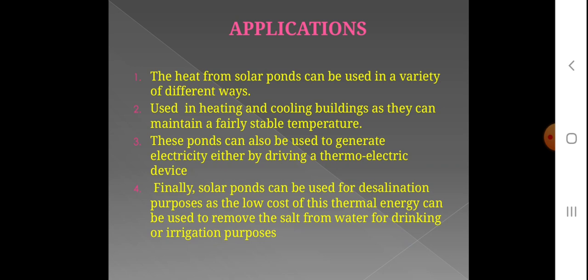Heating and cooling buildings, as solar ponds can maintain a fairly stable temperature. The heat can be used to provide hot temperature for heating. For cooling, a gas pump is used in an evaporator and condensers to cool in the evaporator. Also, the heat of the solar pond can be used to generate electricity. The sun's heat can be converted to electricity — this is a photovoltaic effect.